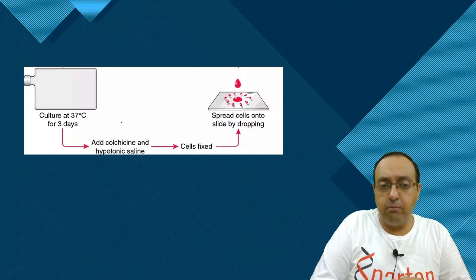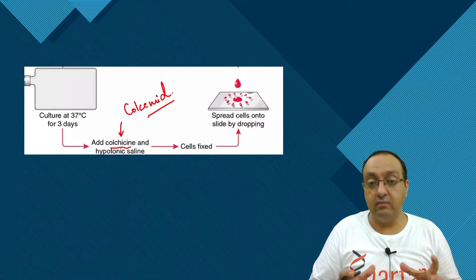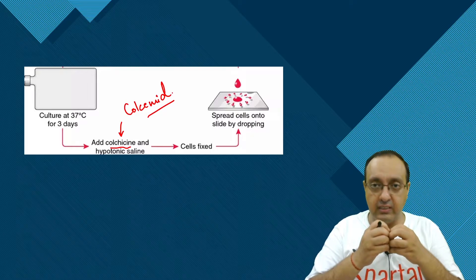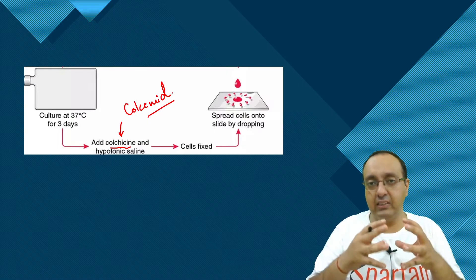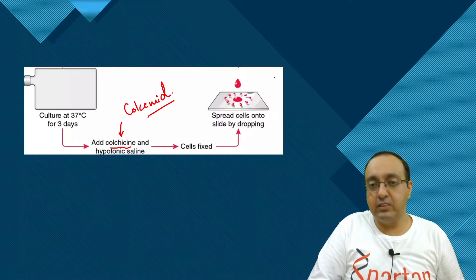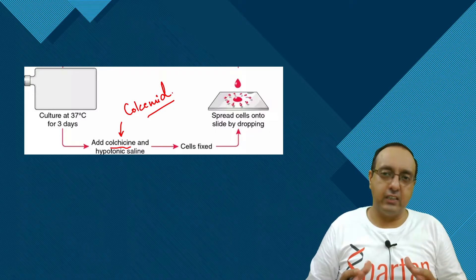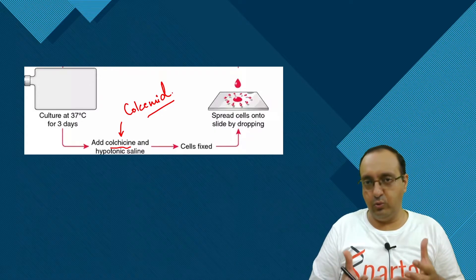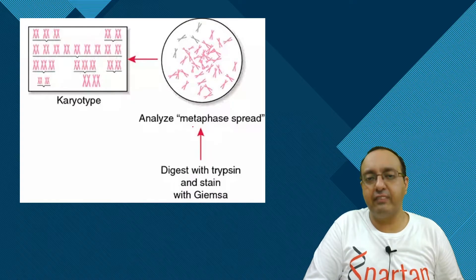Then we add a mitotic inhibitor like colchicine or colcemid, and then add hypotonic saline. This provides the hypotonic shock to the cells — since cells lack cell walls to maintain osmotic pressure, they burst. We then spread the cells onto a slide by dropping. This is still something of an art, and cytogeneticists gain years of experience doing it, but it is doable.